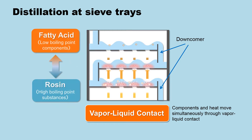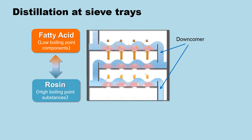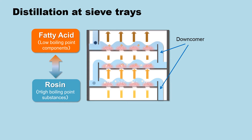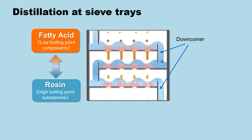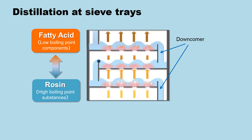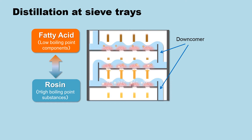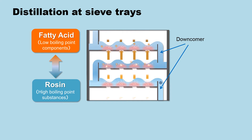Low boiling point components in the liquid evaporate and go up to the higher trays when they come into contact with the vapour and are subsequently heated. High boiling point components remain as liquid and go down to the lower trays. The rosin column separates rosin and fatty acids with this mechanism, which repeats through more than 30 sieve trays.